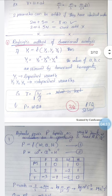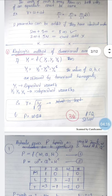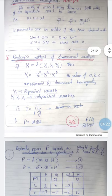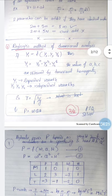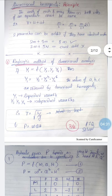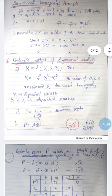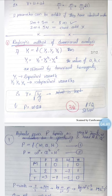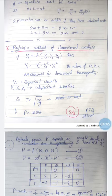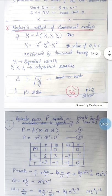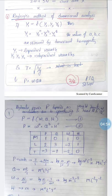Rayleigh's method of dimensional analysis can be used when the number of independent variables is a maximum of three. The method works as follows: if y₁ is a dependent variable depending on independent variables y₂, y₃, y₄, then y₁ is a function of y₂, y₃, y₄. This is expressed as y₁ = y₂ᵃ · y₃ᵇ · y₄ᶜ, where the constants a, b, c are obtained by applying the principle of dimensional homogeneity.